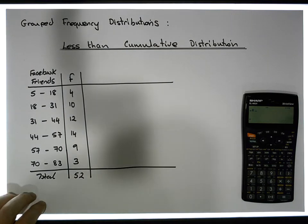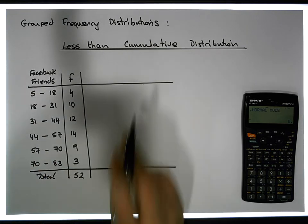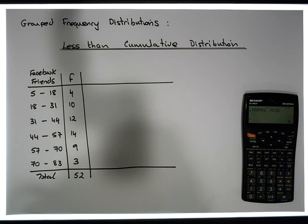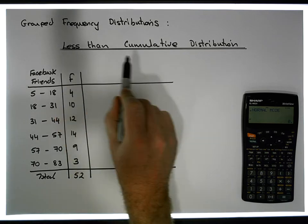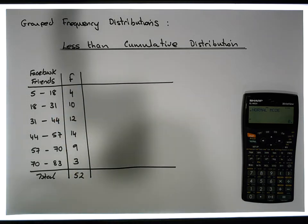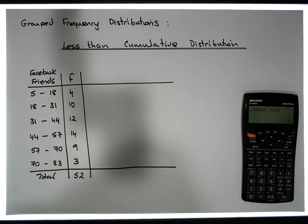Hi guys, this is Jonathan Lambert with the Mathematics Development and Support Service at the National College of Ireland. This short video is going to deal with grouped frequency distributions, and more importantly the construction of a cumulative frequency distribution — specifically what's known as a less than cumulative frequency distribution. We're going to do the less than version, the relative version, and then the percentage version.